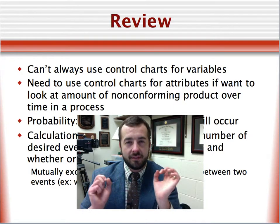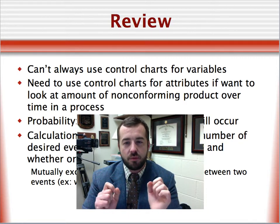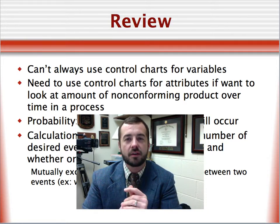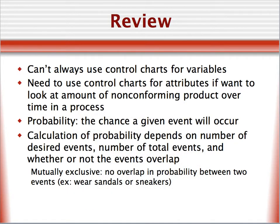To summarize this lesson, we can't always use control charts for variables. We need to use control charts for attributes if we want to look at the amount of non-conforming product over time in a process. We defined probability, and we talked about how the calculation of probability depends on the number of desired events, the number of total events, and whether or not these events overlapped. And this is where we talked about the different probability theorems. In future lessons, I'm excited to show you how to construct these attribute charts to apply these principles of probability.